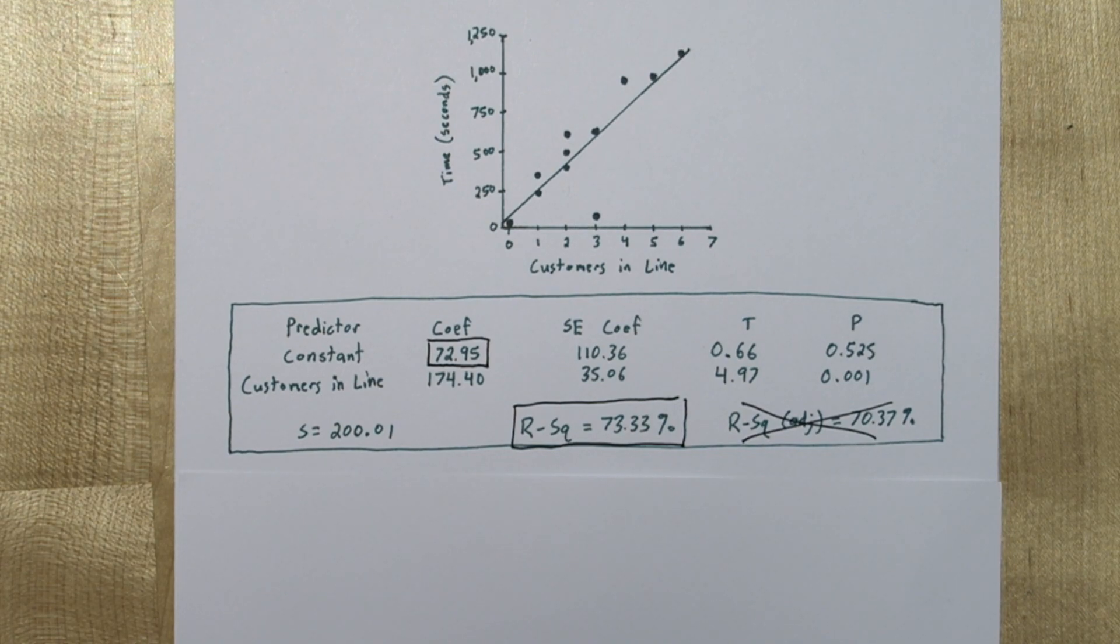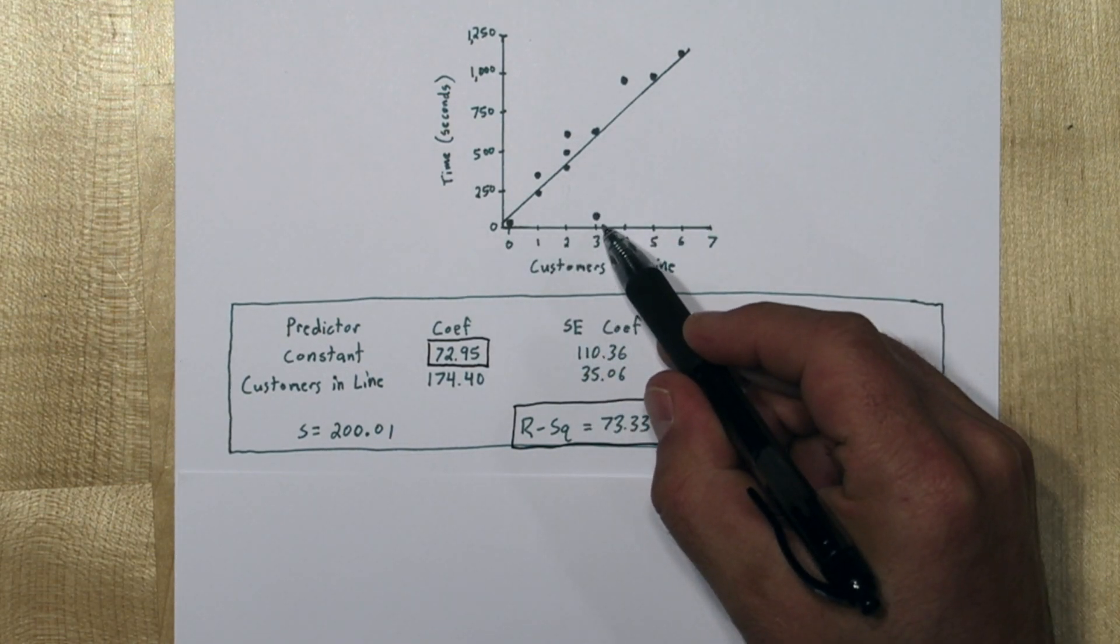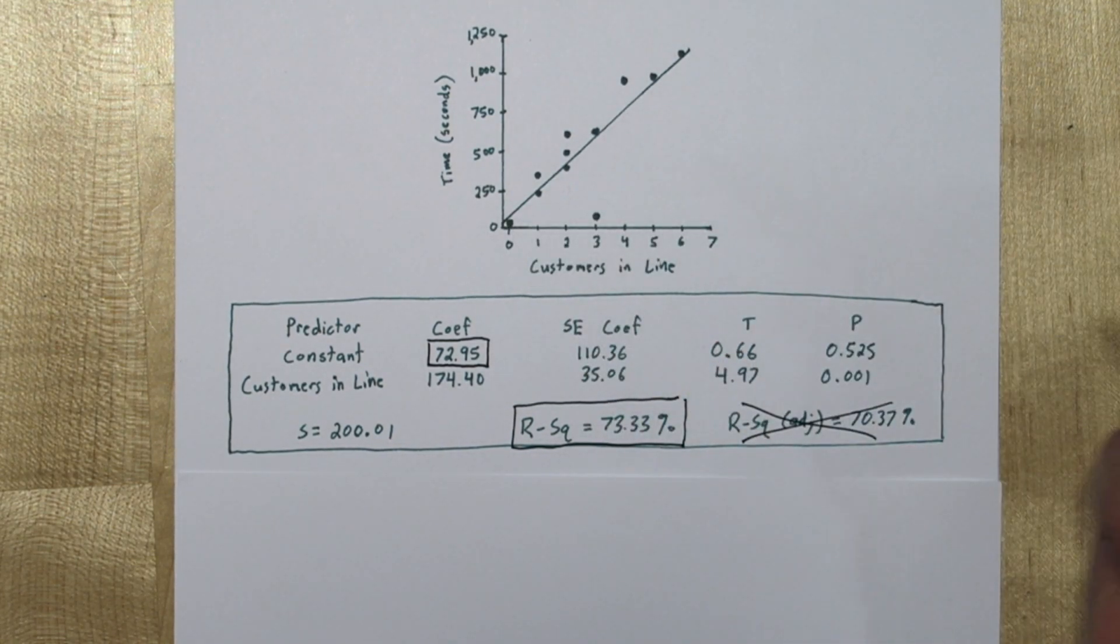In part C, we're asked to identify an outlier and explain why it is an outlier. So looking at the scatterplot, there's this one point that kind of falls away from the rest of this linear pattern right there. Now we don't want to say that this is an outlier because it doesn't follow the pattern of the rest of the points.